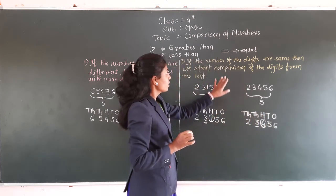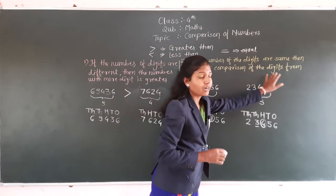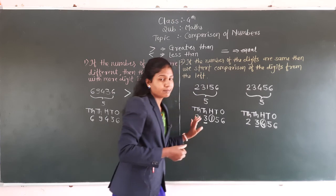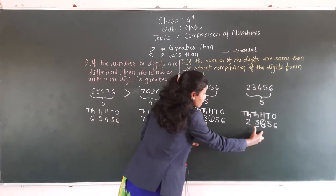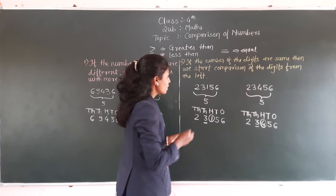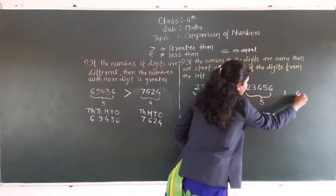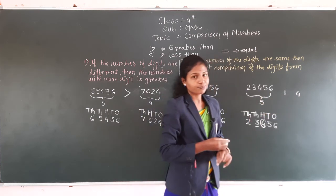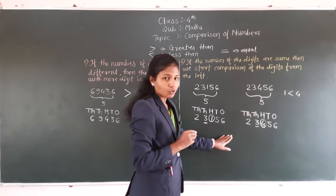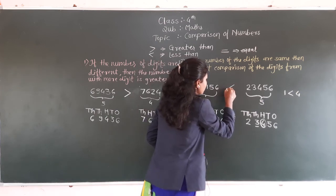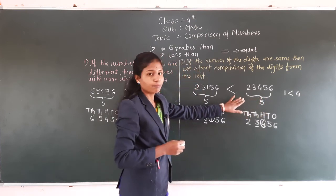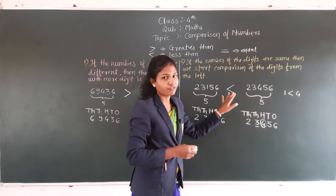यहाँ आपको याद रखना है — while doing the comparison of the digits, we should start from the left. मैंने comparison करते समय left से start किया है, right से नहीं. So here is the change at the 100s place — here is 1 and here is 4. आपको तो पता होगा — अगर हम 1 और 4 देखें, 4 is bigger than 1. So which sign should we use here? We use the greater than sign. It means 23,456 is bigger than 23,156.